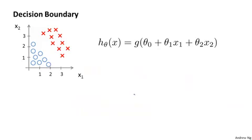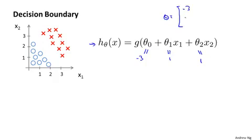Now let's suppose we have a training set like that shown on this slide, and suppose our hypothesis is h of x equals g of theta 0 plus theta 1 x1 plus theta 2 x2. We haven't talked yet about how to fit the parameters of this model — we'll talk about that in the next video. But suppose that via a procedure to be specified, we end up choosing theta 0 equals minus 3, theta 1 equals 1, theta 2 equals 1, so my parameter vector theta equals minus 3, 1, 1. Given this choice of parameters, let's try to figure out where our hypothesis will predict y equals 1 and where it will predict y equals 0.